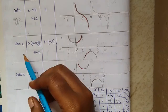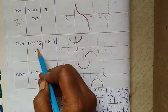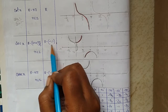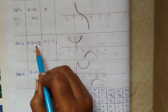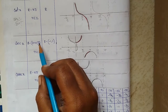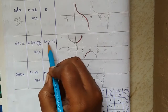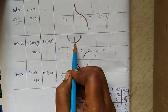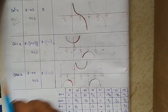For the secant function, in the domain remove the points (2n+1)π/2 where n belongs to integers. In the range, remove the set minus 1 to 1 — that is R minus the open interval (-1, 1). Note that 1 is not included in the set, so it is an open interval.